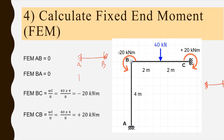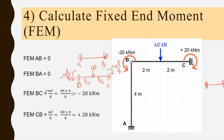Now taking member BC: a concentrated load of 40 kN is acting at the center. From the fixed end moment equation for a concentrated load at center, FEM = ±WL/8. So FEM_BC = −40 × 4 / 8 = −20 kN·m, and FEM_CB = +40 × 4 / 8 = +20 kN·m.